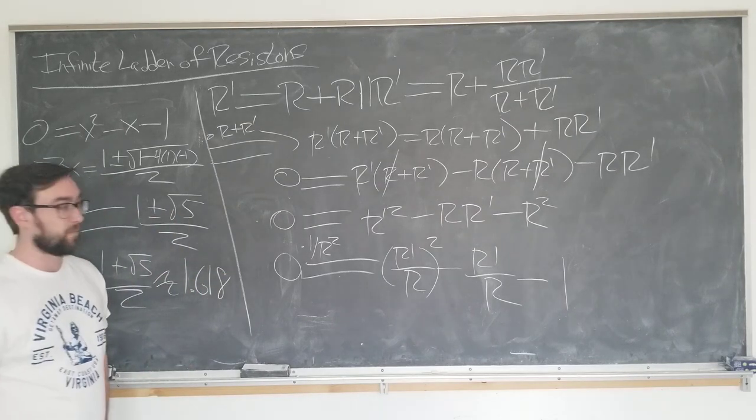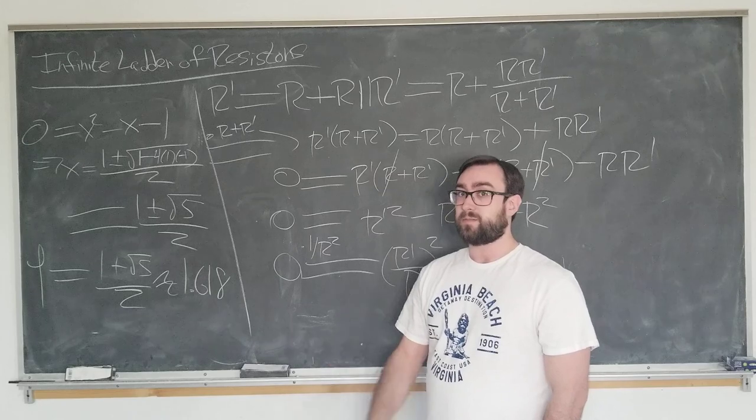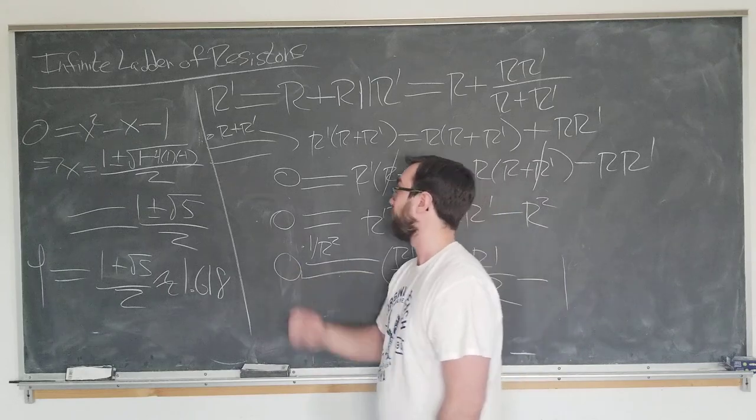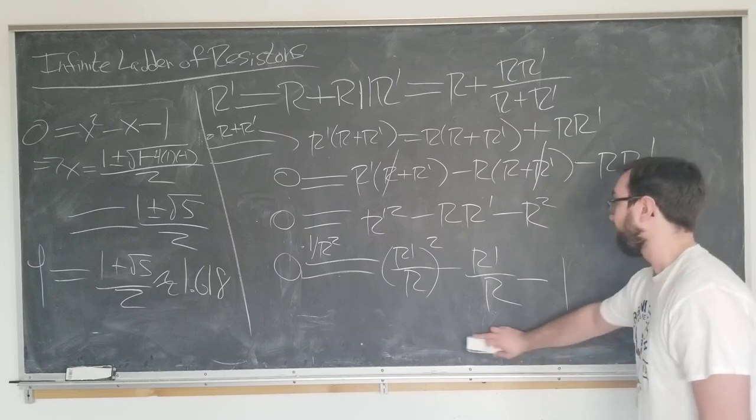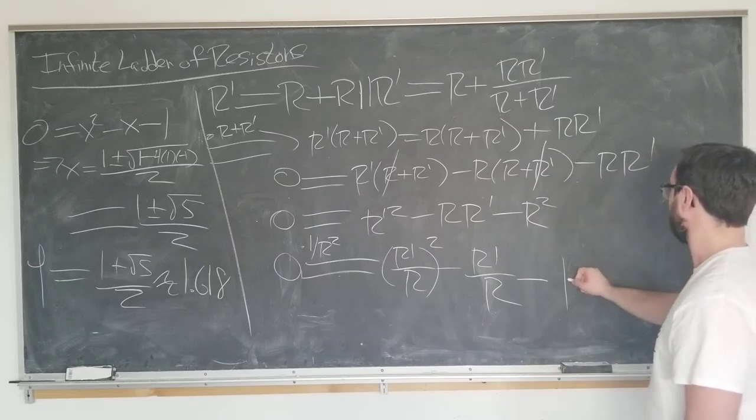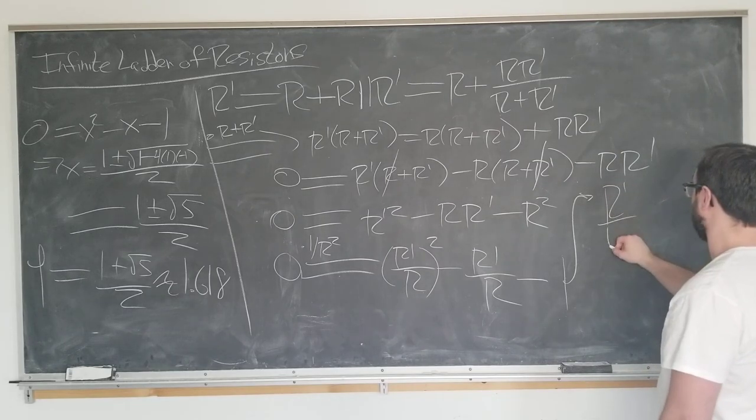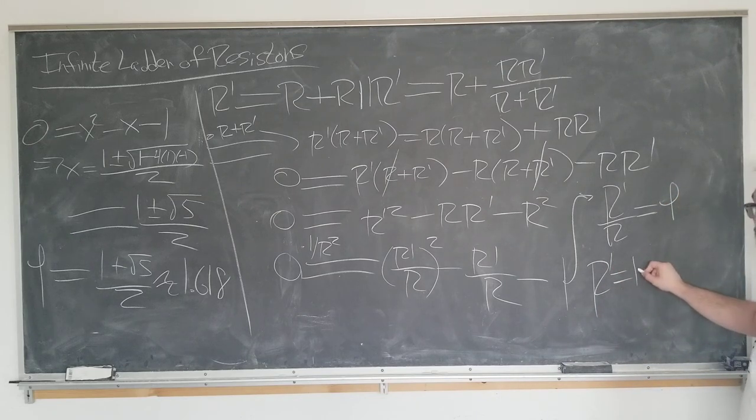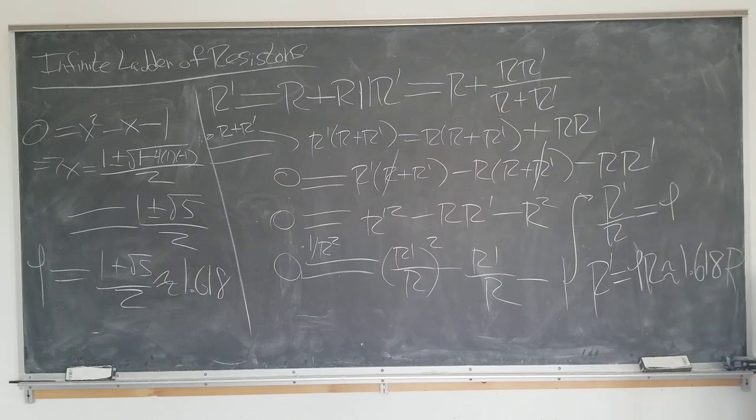The golden ratio appears everywhere. It appears in buildings, people's faces, spirals of animals, rectangles. But what's interesting to me in this context, there's nothing geometric in sight at all, which is how it typically appears. Yet it's still here, clear as day. Okay, so let's apply this to what we've learned here. We have learned that r prime over r equals phi, or r prime equals phi r, which is approximately 1.618 r.